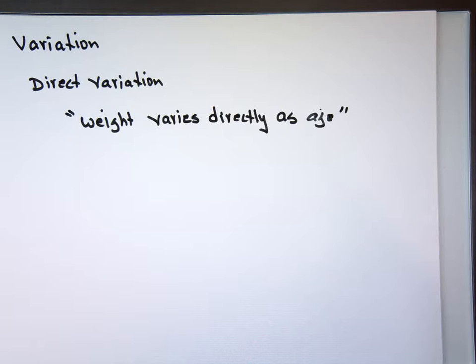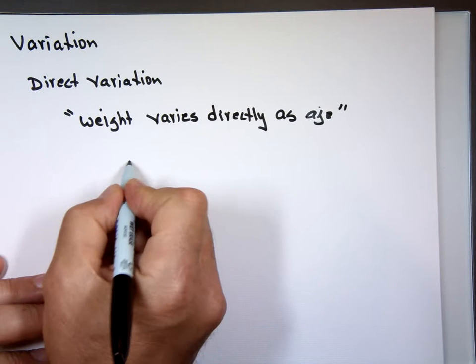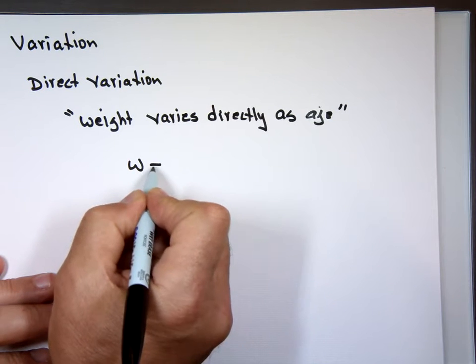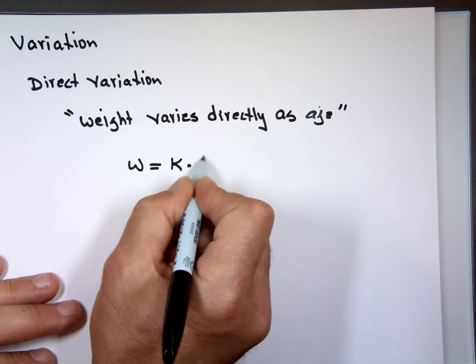the other one increases. As I get older what happens to my weight? Gets bigger, heavier. So the way we write that mathematically, doesn't matter which one you write first, you can say the weight varies directly, that means K times my age.